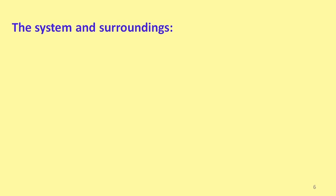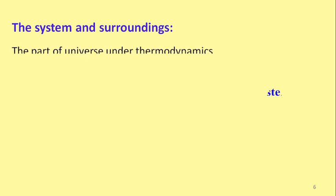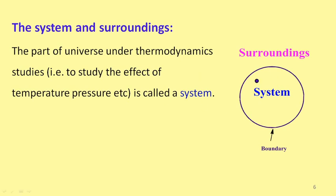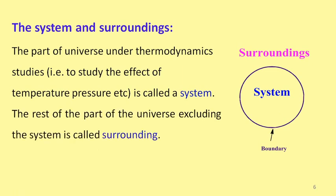Some terms used in thermodynamics — the system and surroundings: the part of the universe under thermodynamic studies, that is to study the effect of temperature, pressure, etc., is known as a system. The rest of the universe excluding the system is known as the surroundings, and there is an imaginary boundary between the system and the surroundings.